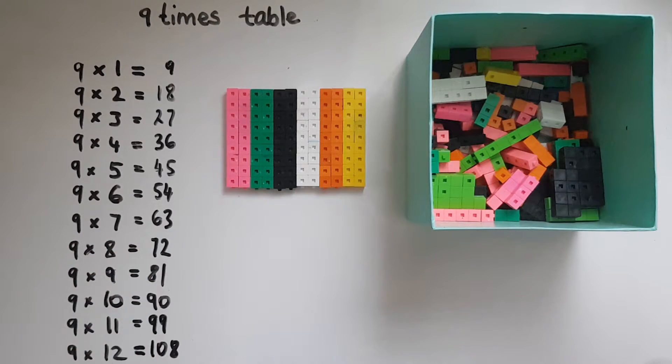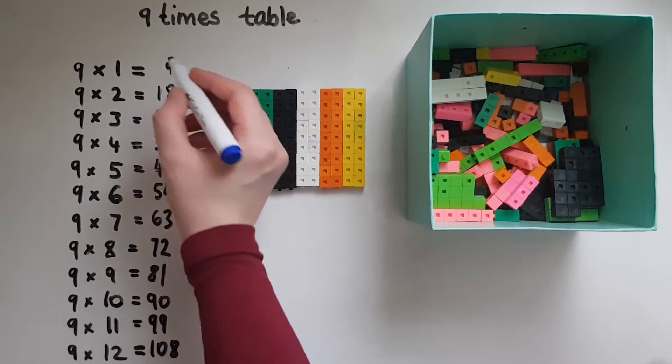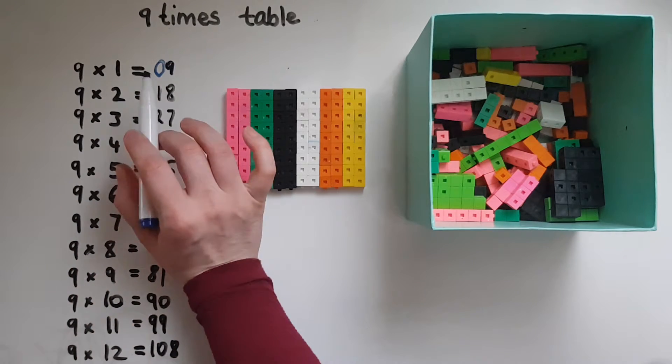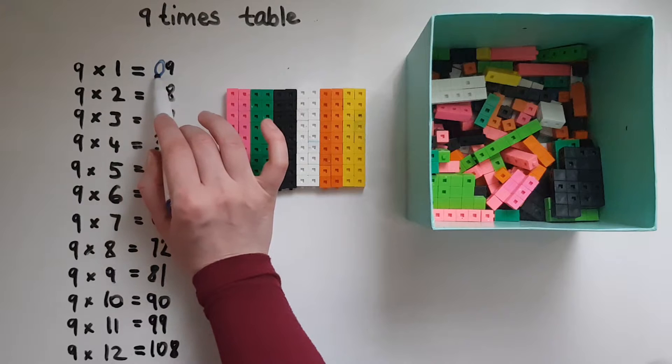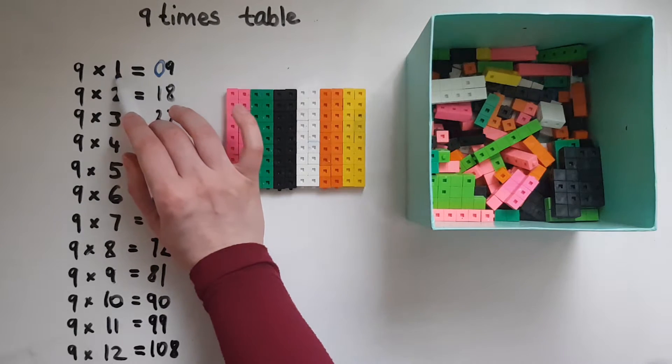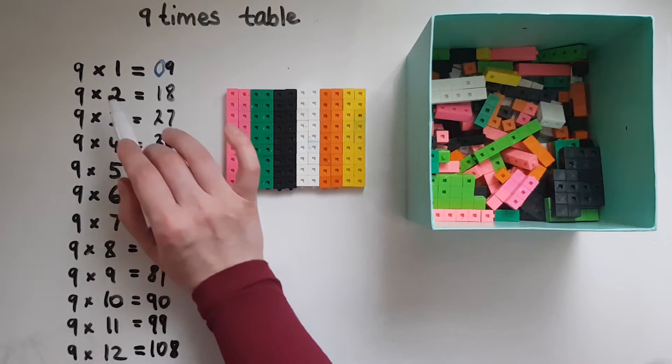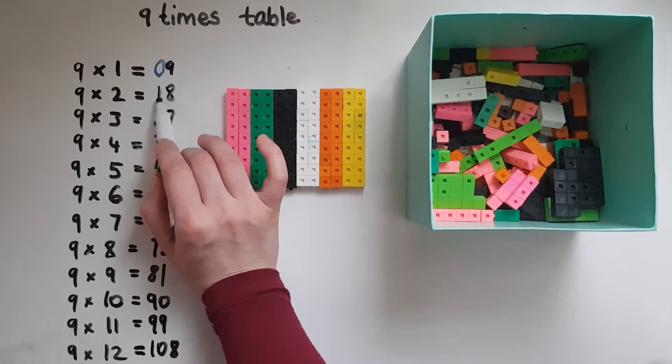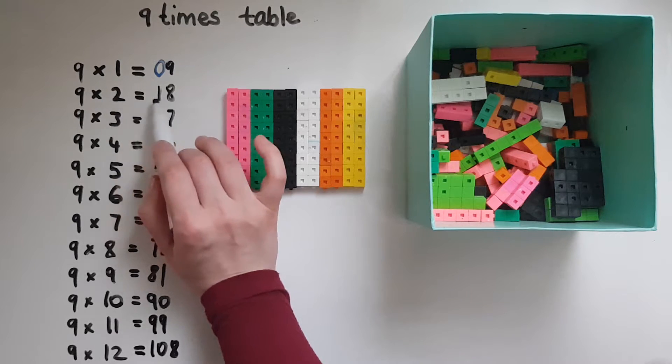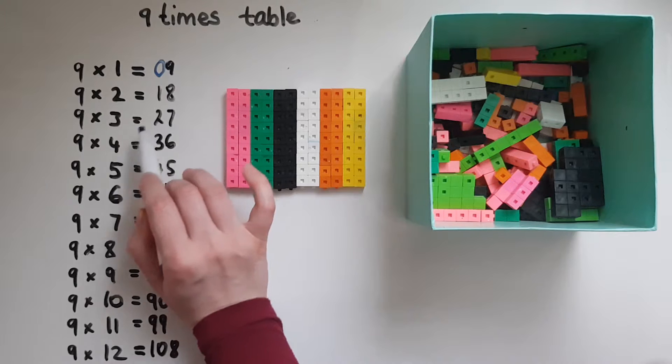Also, what happens is when you multiply 9 by 1, the answer starts with 1 less. So 1 less than 1 is 0. If you multiply 9 by 2, the answer starts with 1 less. So 2 take away 1 is 1. 3 take away 1 is 2.